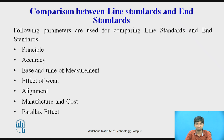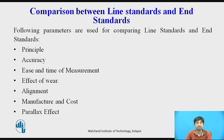Manufacture and Cost: Line Standards are simple to manufacture at low cost. Whereas End Standards have a complex manufacturing process and the cost is high. Parallax Effect: Line Standards are subjected to Parallax Error, whereas End Standards are not subject to Parallax Error. The best example for Line Standard is our scale, and for End Standards it is slip gauges, vernier caliper, and micrometer.